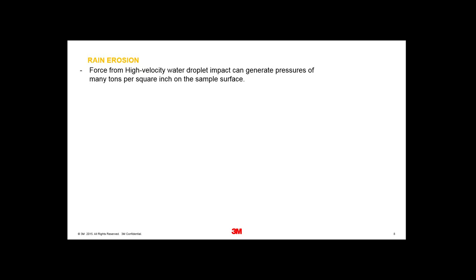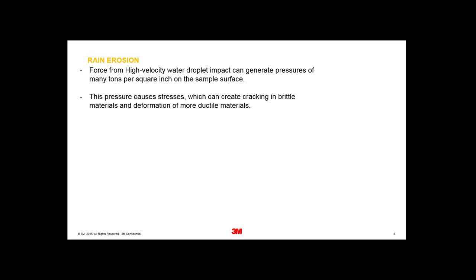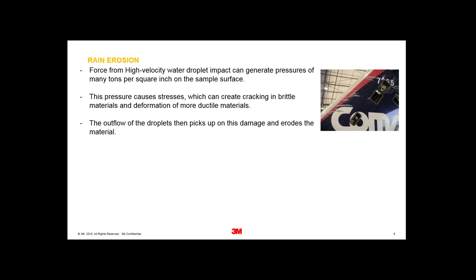If it's a ductile material, it ends up deforming. The moisture then leaches away those loosened particles, thus reducing the mass of the surface. You end up with material being taken away. Here you can see the tail fin of a commercial airliner that's gone through a hailstorm — it's just taken the paint away straight down to the bare aluminium.